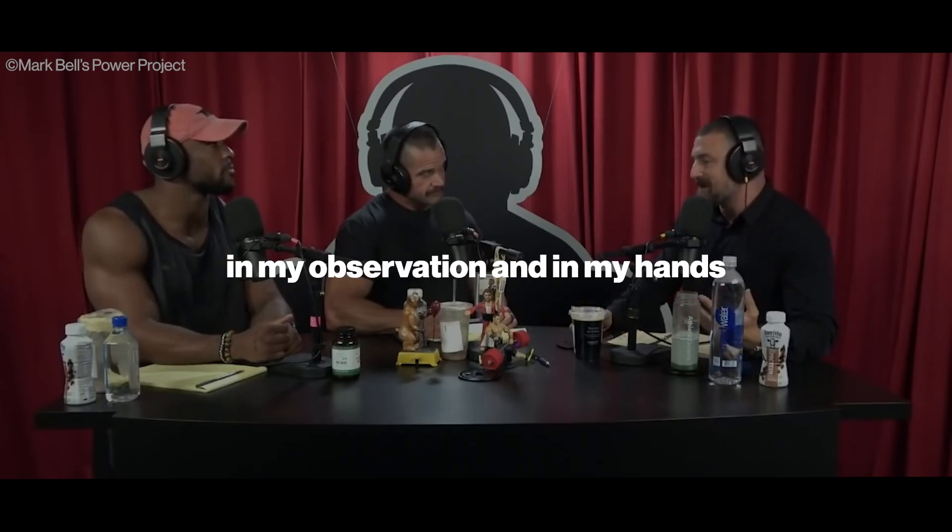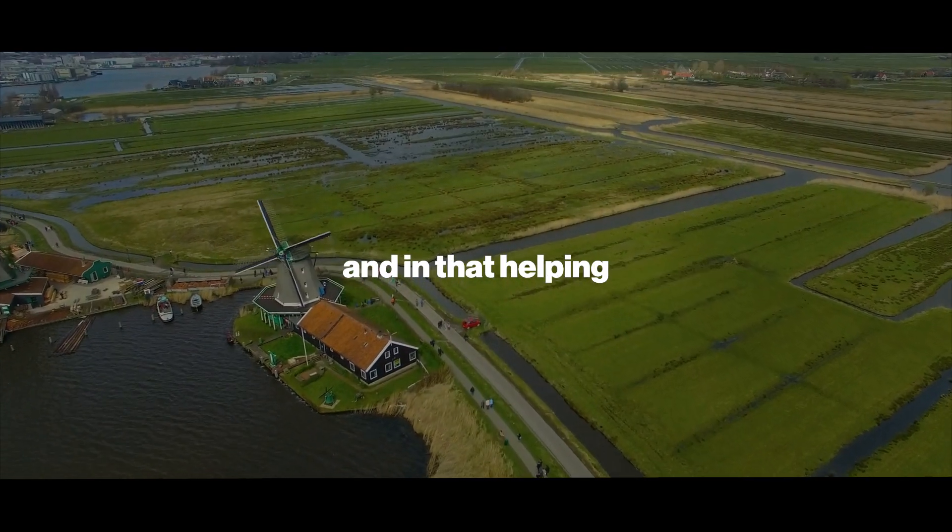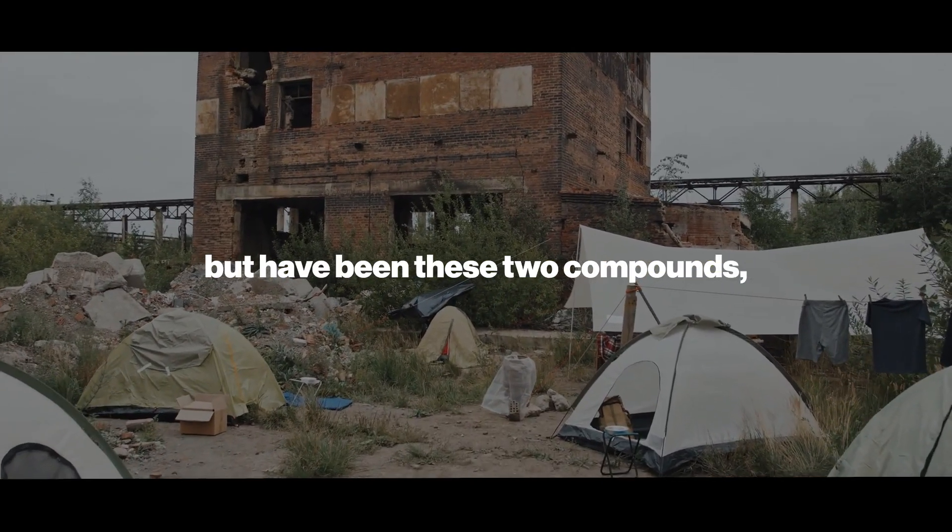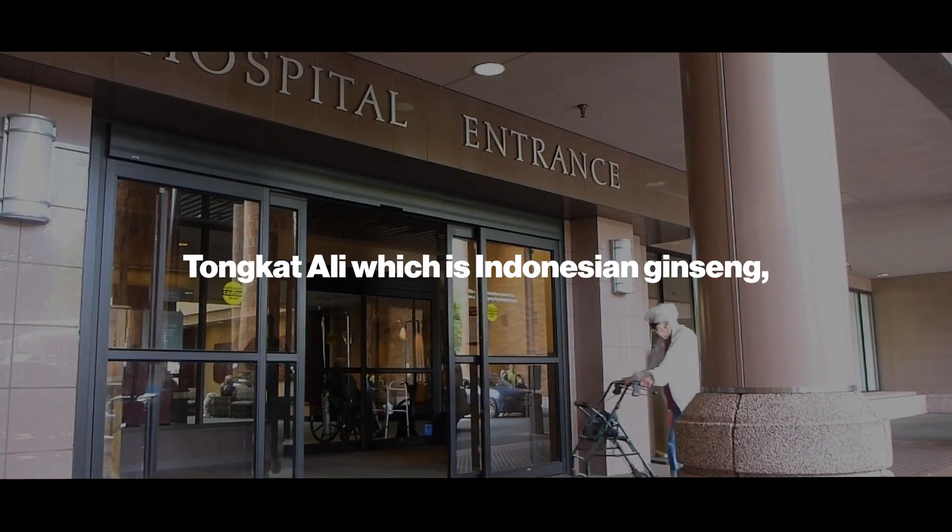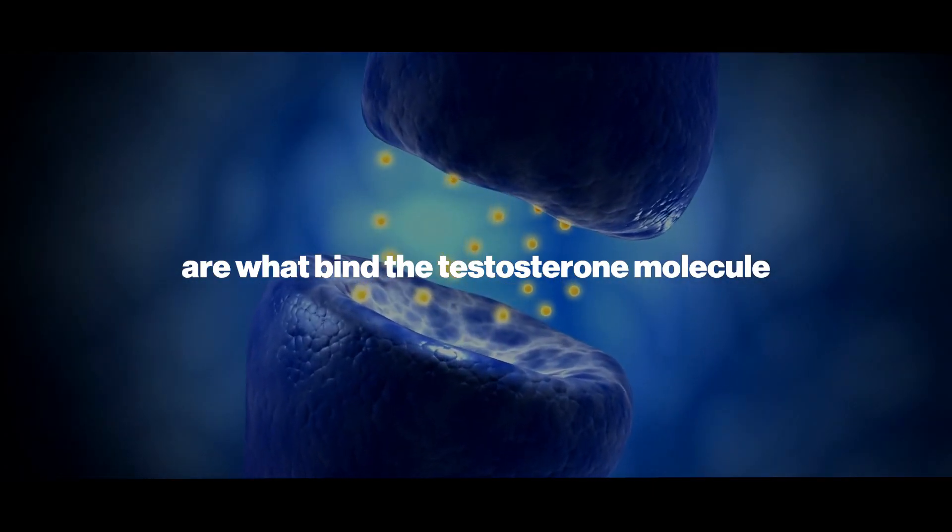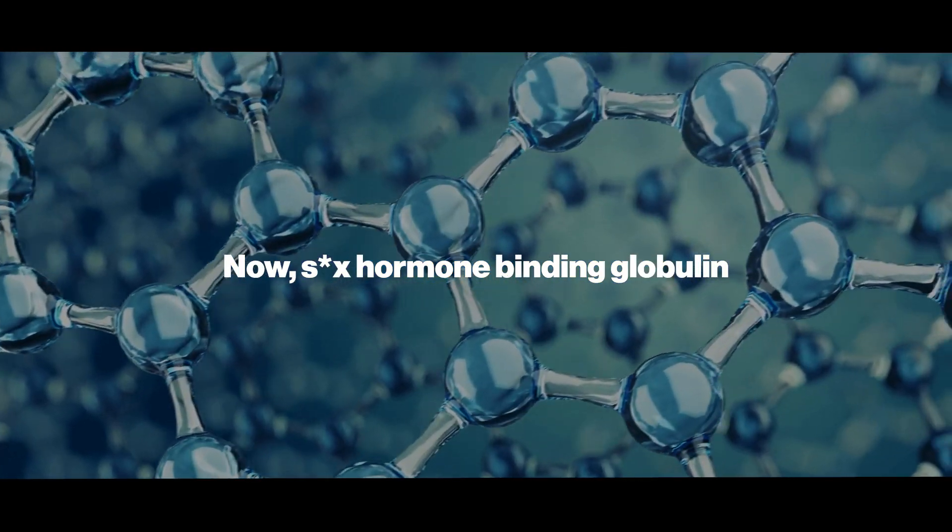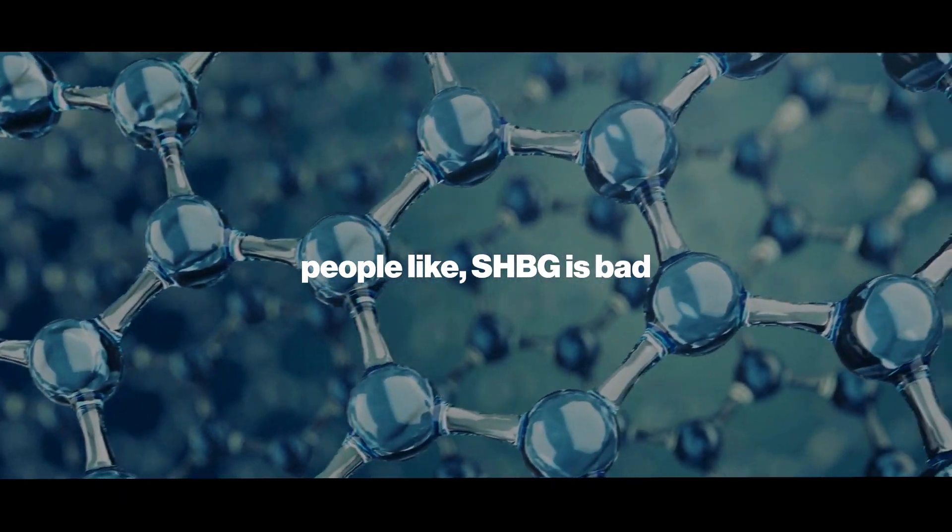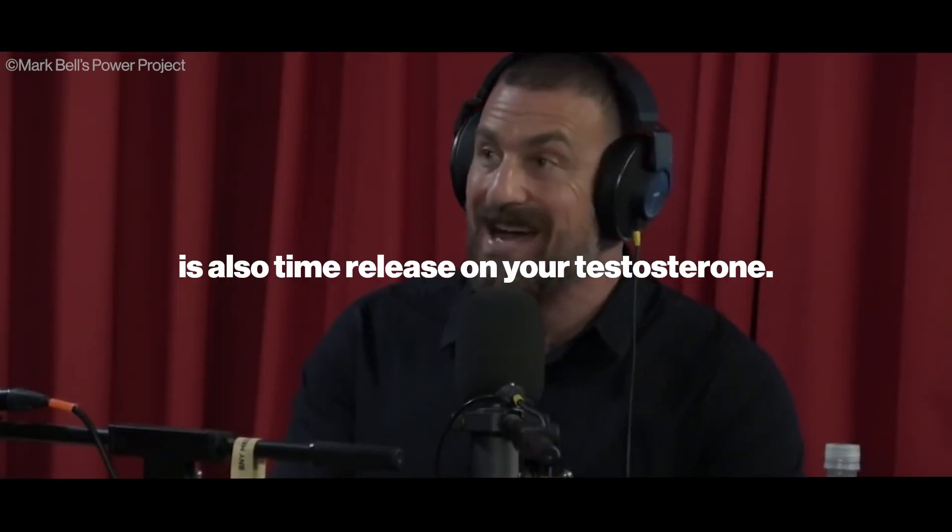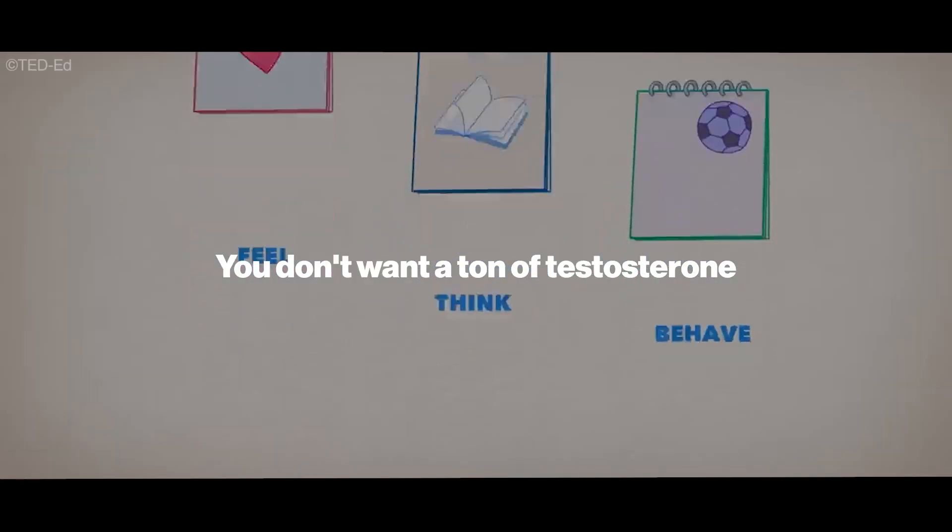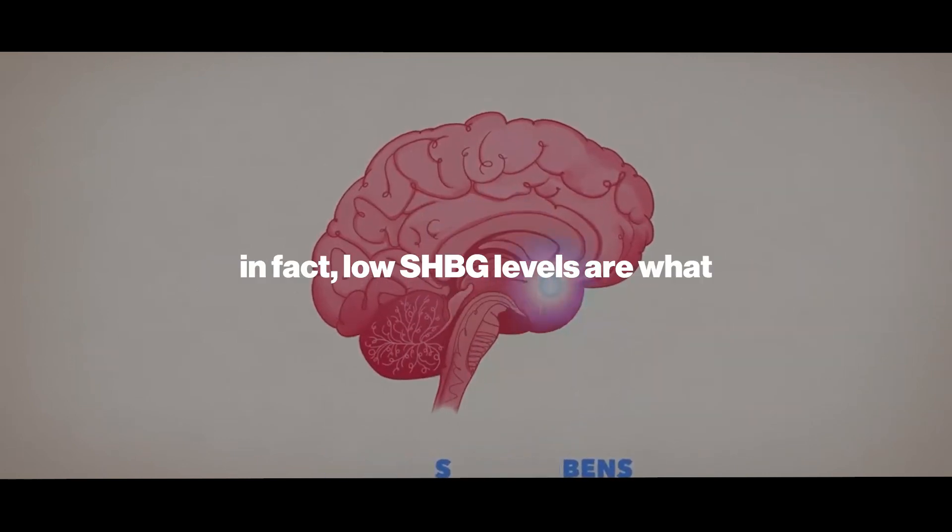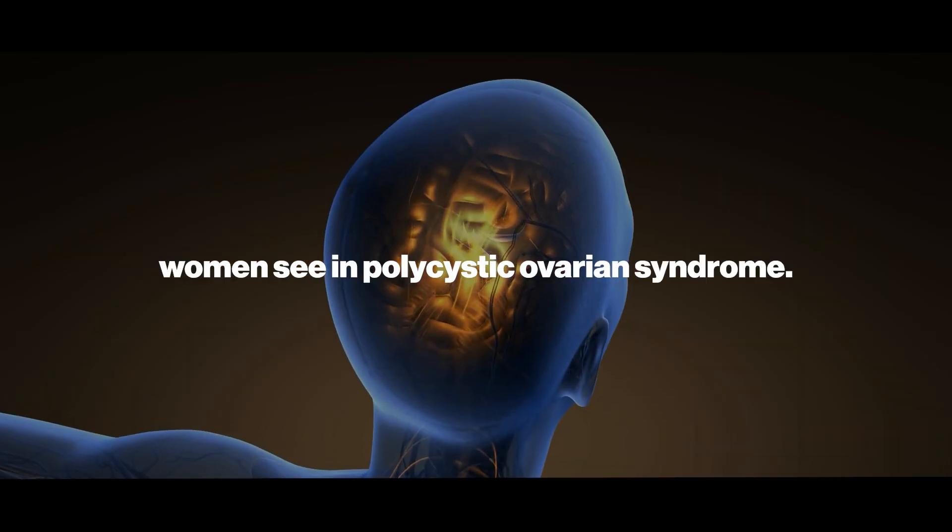The two things that have made a big difference have been these two compounds. Tongkat Ali, which is Indonesian ginseng, reduces sex hormone binding globulin. Hormone binding globulin and albumin bind the testosterone molecule and deliver it to your different tissues. People say SHBG is bad because free T is what counts - true. But hormone binding globulin is also time-release on your testosterone. You don't want a ton of testosterone then it plummeting either. Having some hormone binding globulin around is good. In fact, low SHBG levels are what women see in polycystic ovarian syndrome.